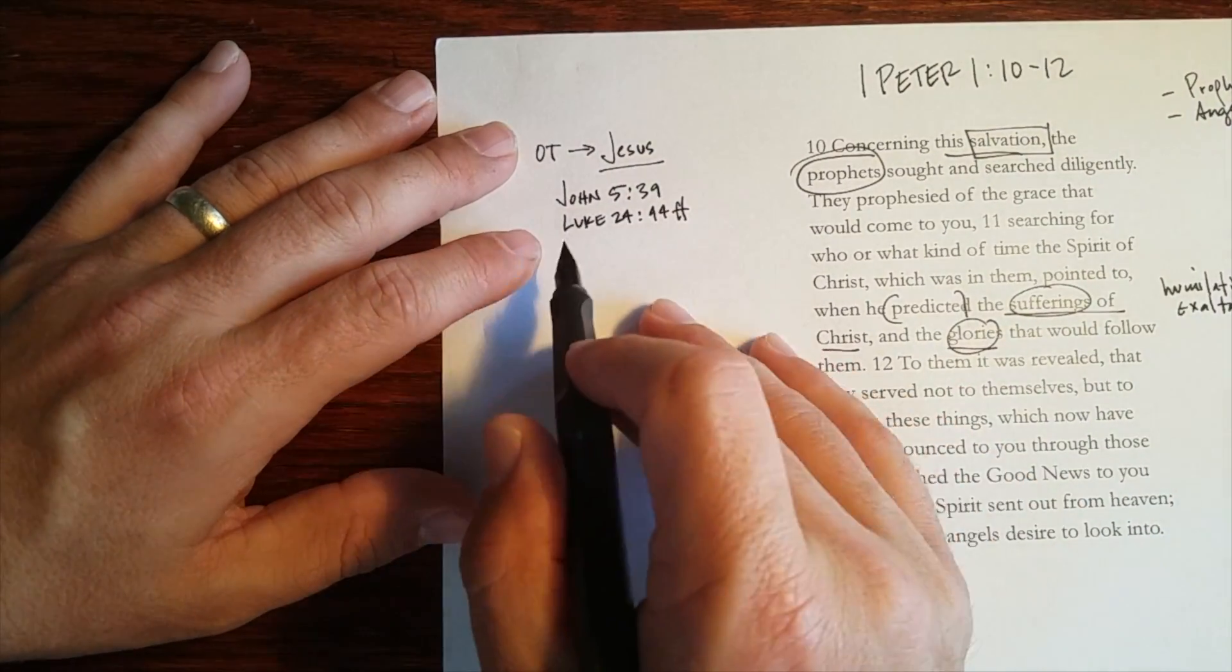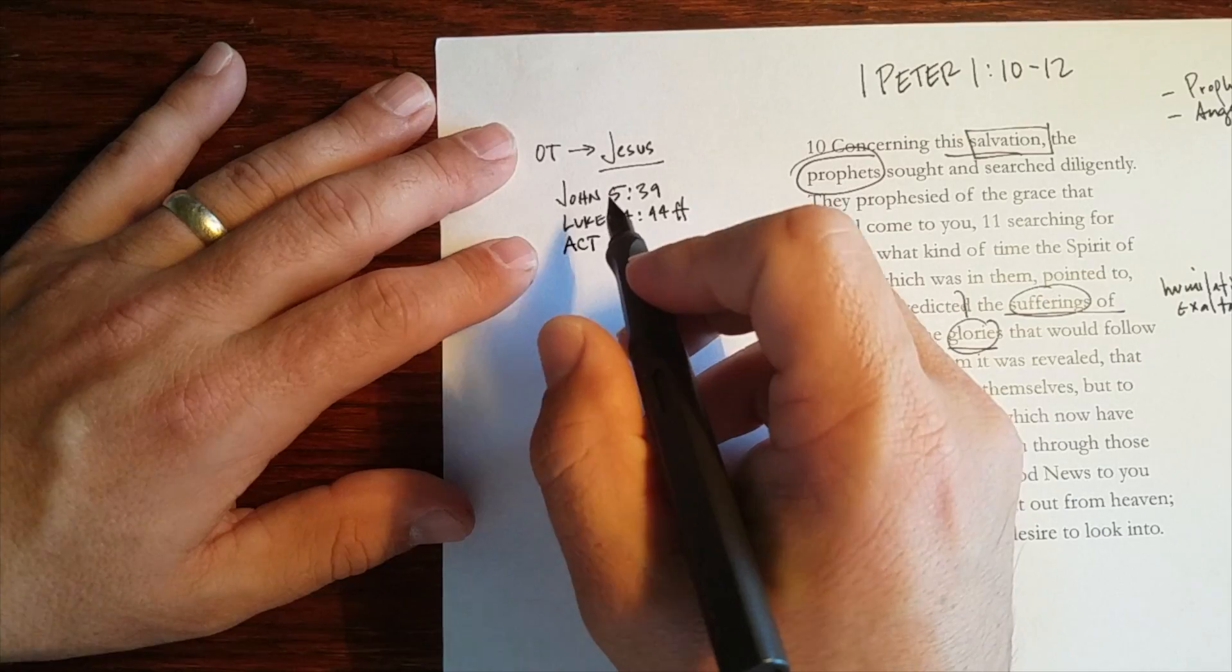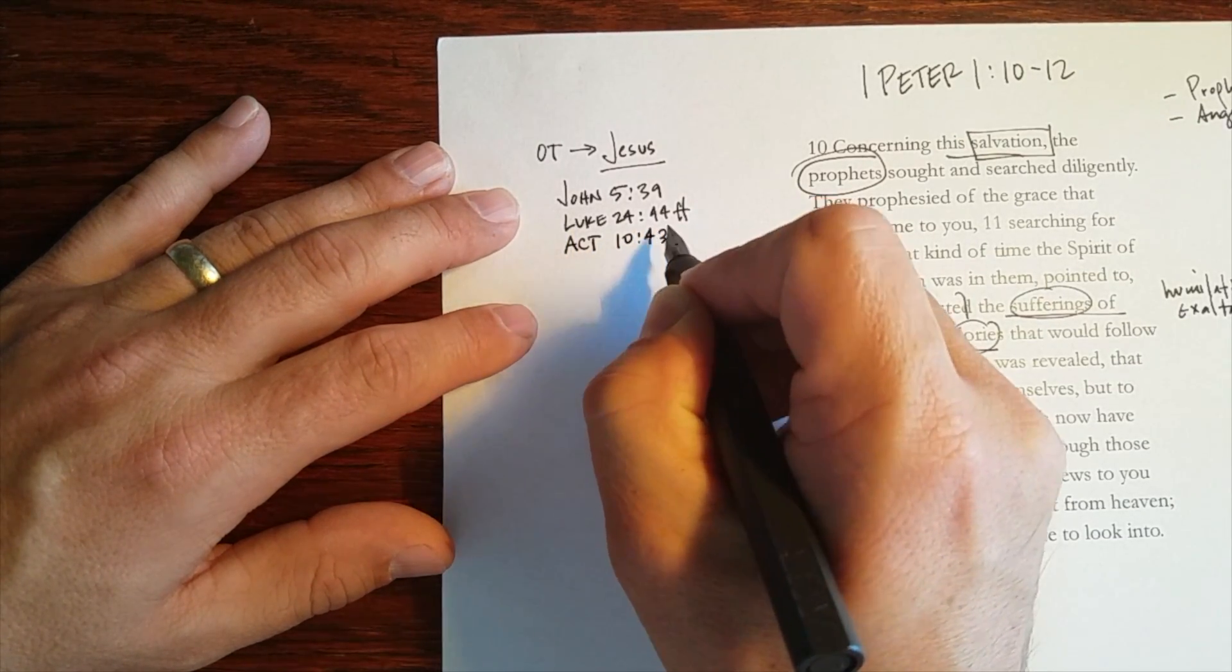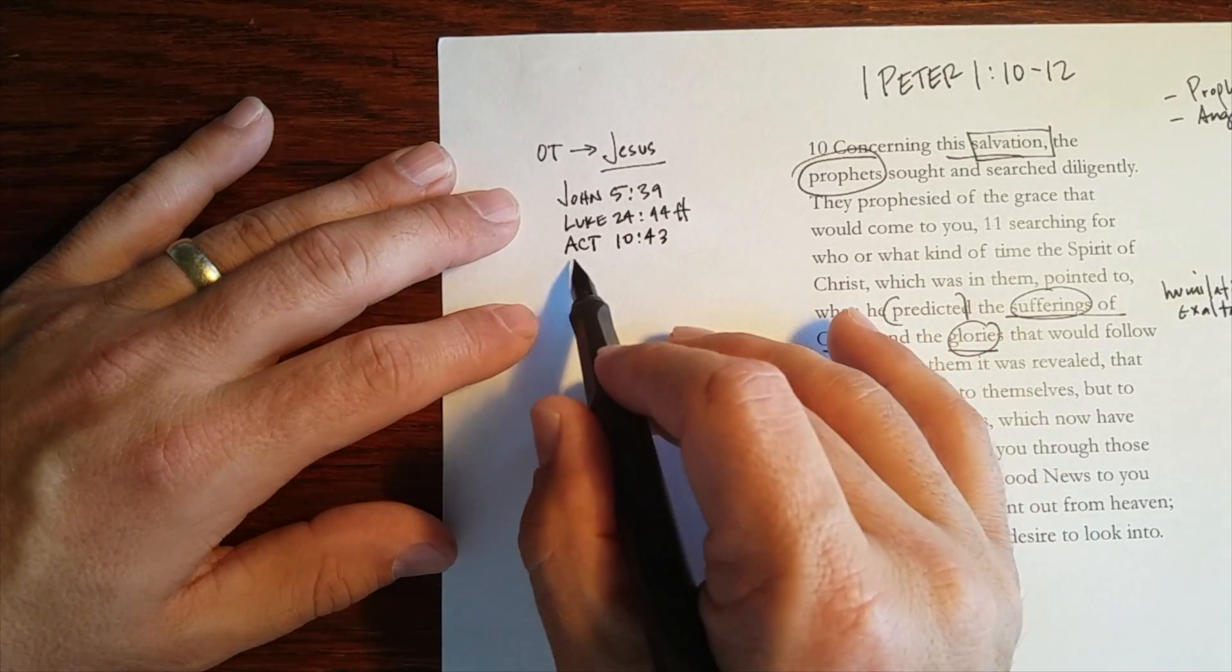Now my favorite, mostly people talk about these, my favorite text is this one, Acts chapter 10, verse 43, which is the preaching of Peter down at Cornelius' house.